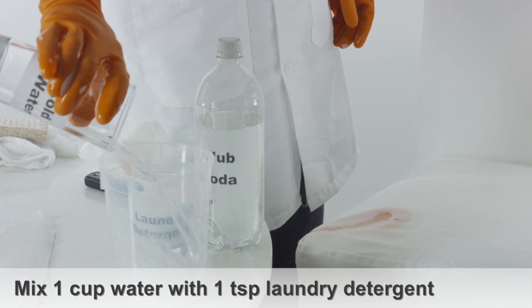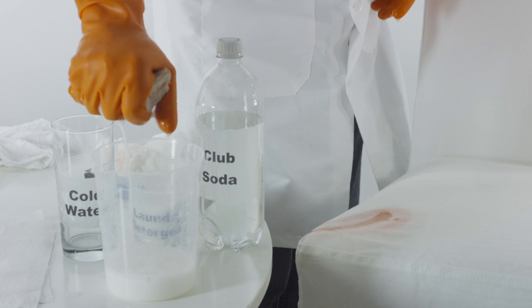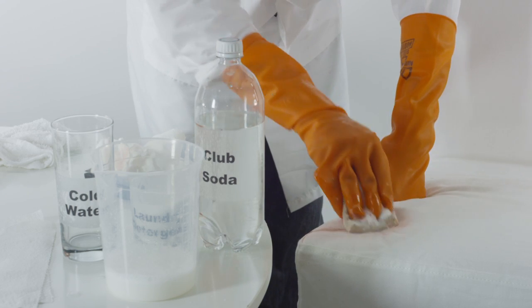Mix 1 cup water and 1 teaspoon laundry detergent and then apply to the stain. Scrub with a sponge to gradually lighten the stain.